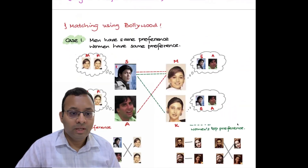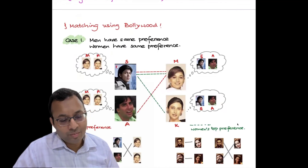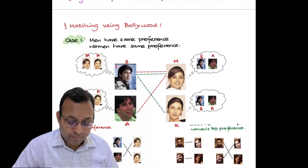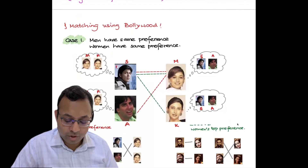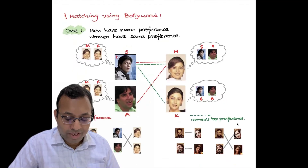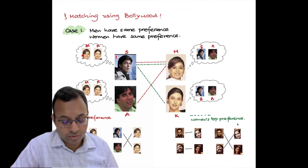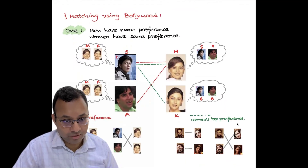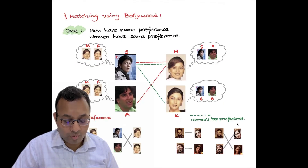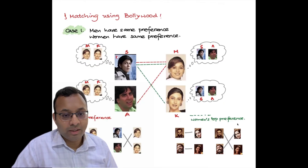The first example is from the movie Dil To Pagal Hai. Most of my examples are from the 90s and 2000s — if there are recent examples, let me know and I'll update the slides with movies from after 2010. In this movie, the green edges show women's top preference and red edges show men's top preference. In this case, men have the same preference and women also have the same preference. Shah Rukh prefers first Madhuri then Karishma, and Akshay also prefers first Madhuri then Karishma — same preference for both men. Women also share the same preference: Madhuri prefers Shah Rukh then Akshay, and Karishma also prefers Shah Rukh then Akshay.